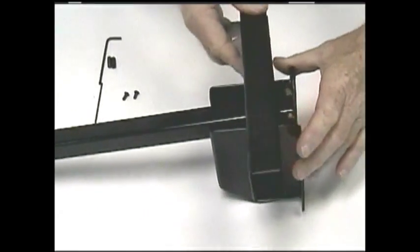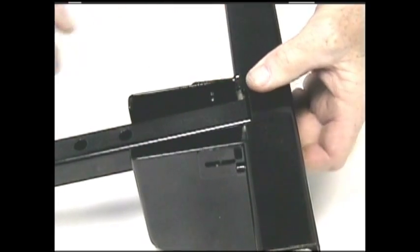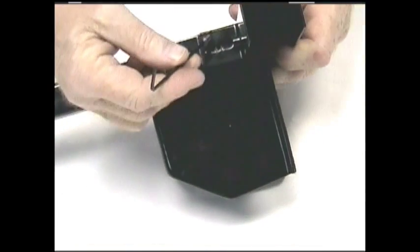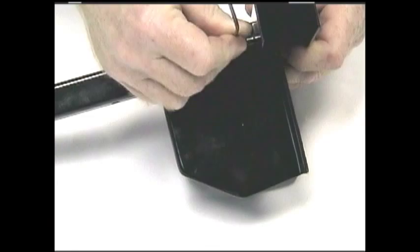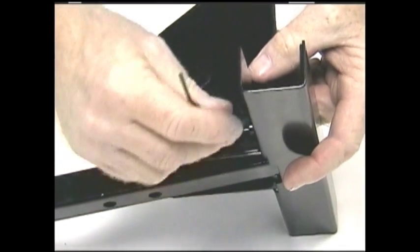Assemble the rim bracket as shown using the supplied screws. Once they are tightened, unscrew them only one quarter of a turn so that the rim bracket will be able to slide on its groove.